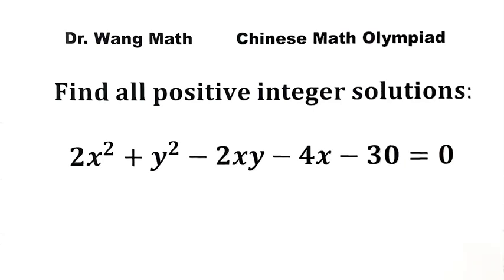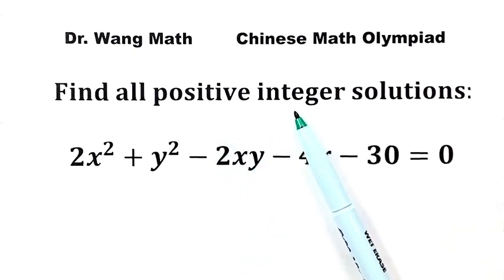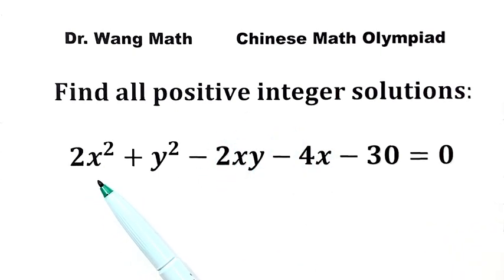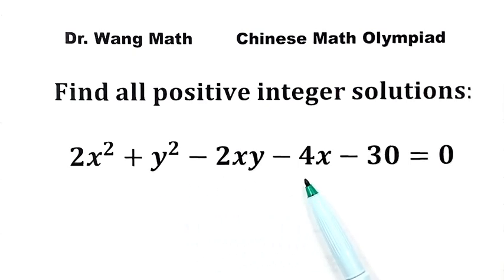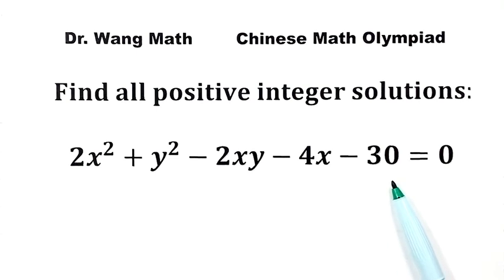In this video, we'll be solving a question from the Chinese math olympiad. Find all positive integer solutions of the equation 2x² + y² − 2xy − 4x − 30 = 0.